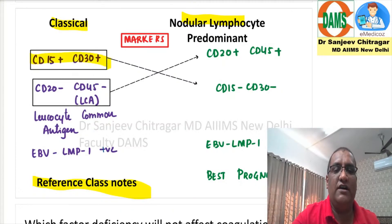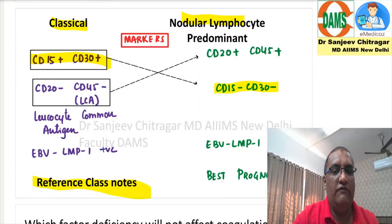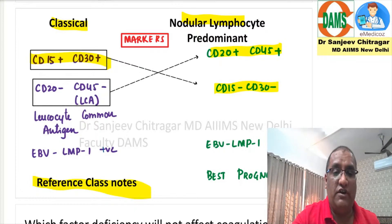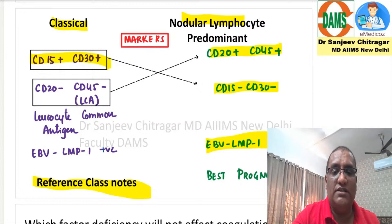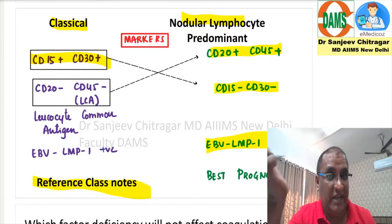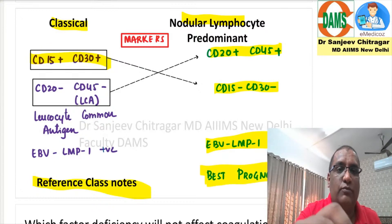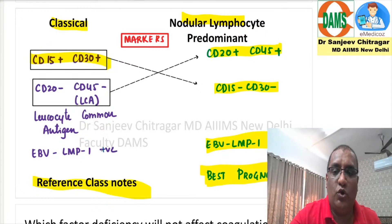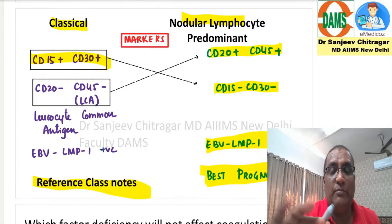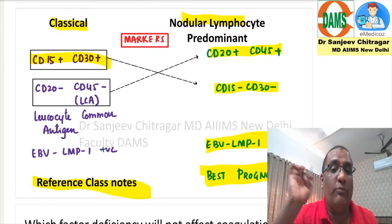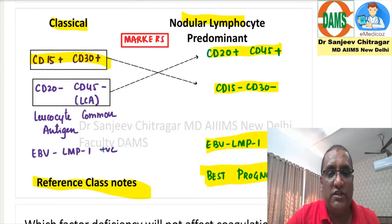Now look at what questions they have asked: CD30, CD15/30 negative in nodular lymphocyte predominant, CD20/EMA positive — EMA also positive. And EBV LMP — look at this, this was also asked. EBV LMP is negative, meaning EBV association is not there. And the prognosis — this is the one they asked here. The prognosis: I had told you nodular lymphocyte predominant has the best prognosis, but they presented it as poor prognosis. So this was one question from pathology.